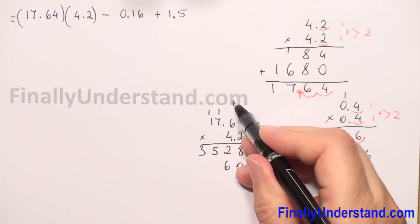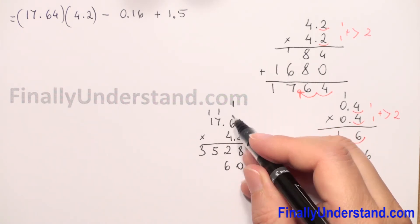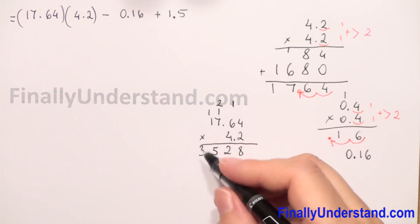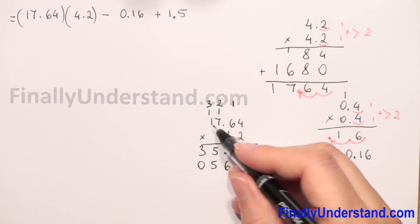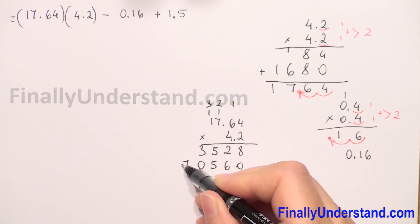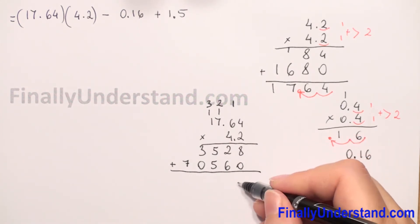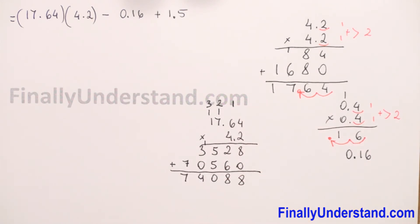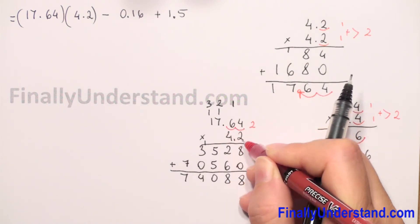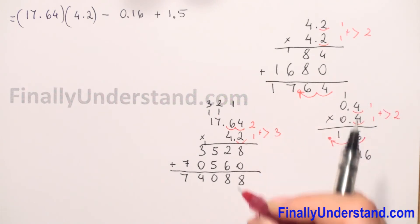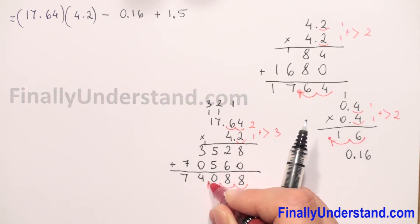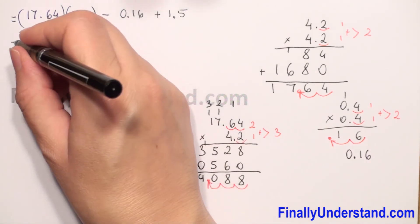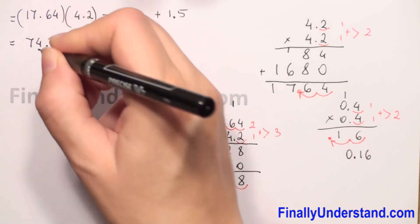4 × 4 = 16, write 60 (shifted) and carry 1; 4 × 6 = 24 + 1 = 25, write 5 carry 2; 4 × 7 = 28 + 2 = 30, write 0 carry 3; 4 × 1 = 4 + 3 = 7. Adding the partial products: 8; then 2 + 6 = 8; then 5 + 0 = 5 with carry giving us digits 7, 4. Now count decimal places: first number has 2, second has 1, total 3 decimal places from the right. The decimal point goes between 4 and 0, giving 74.088.